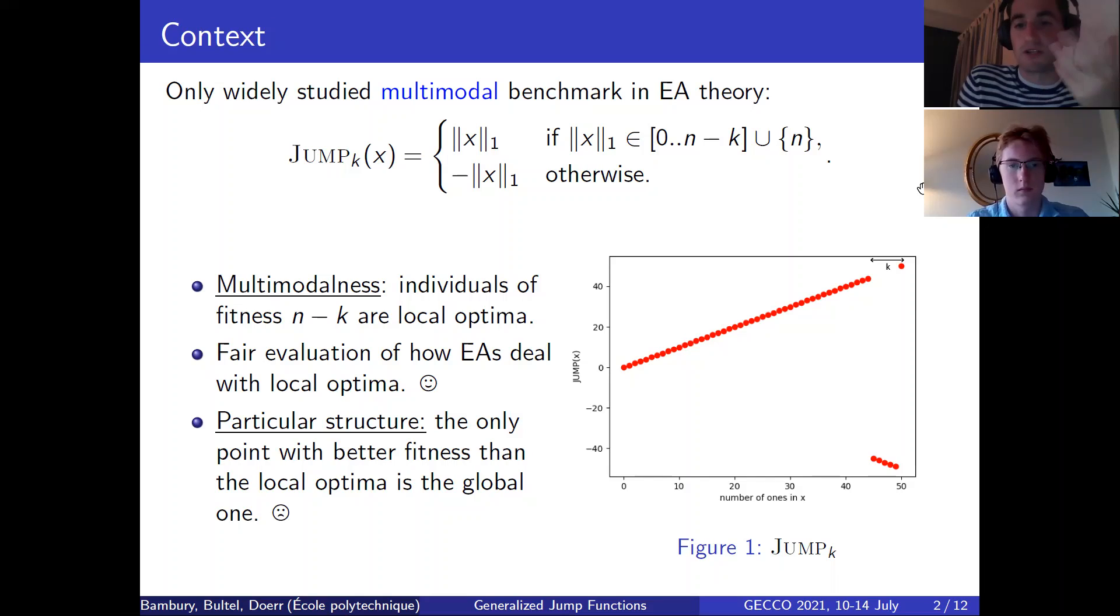Multimodal meaning that there exists local optima which are not the global optima. Here they are easy to spot on Jump_k. It's all the points with fitness n minus k. And so consequently when you run an algorithm on Jump_k and study its runtime theoretically, you get good guarantees and good evaluation on how this evolutionary algorithm deals with local optima in general. And so how it will deal with it on real life problems.